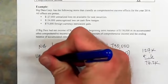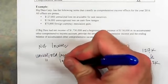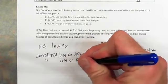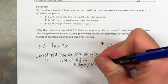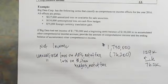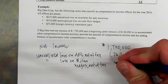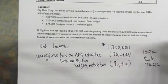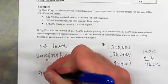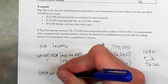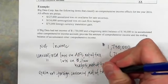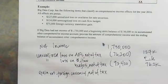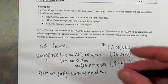Next is the unrealized loss on cash flow hedges. Applying the same 40% tax rate, the net-of-tax amount is $154,000 times 0.6, which comes out to $92,400. And then we had a foreign translation gain. Remember that presenting net of tax is a required disclosure, not optional — you can't leave that off.